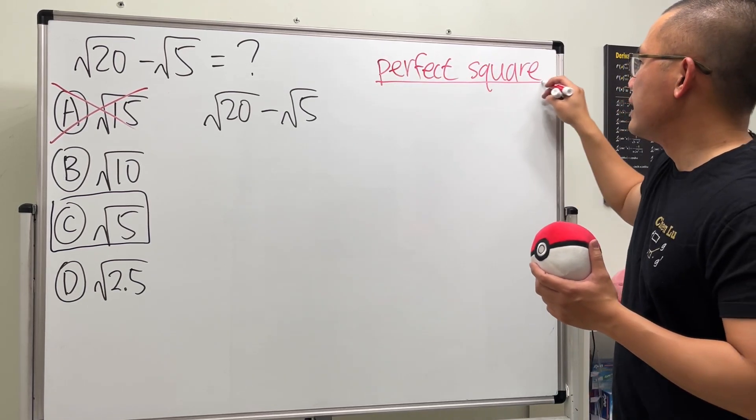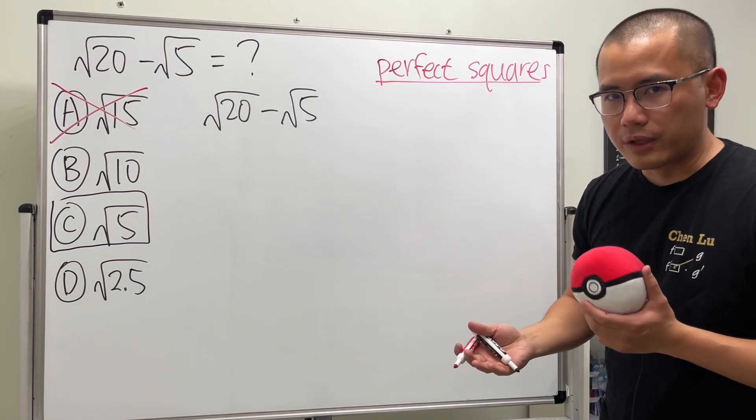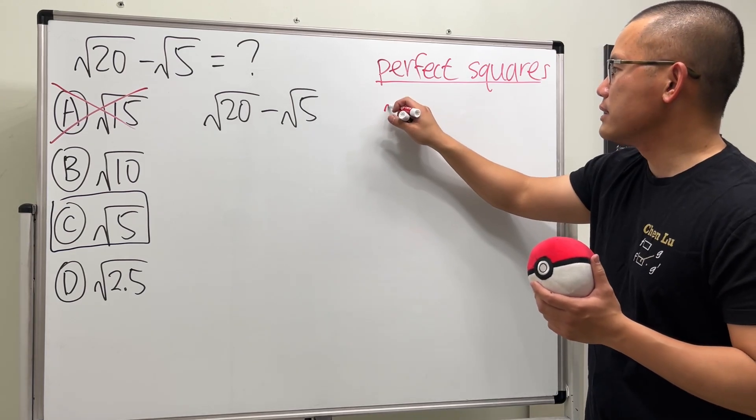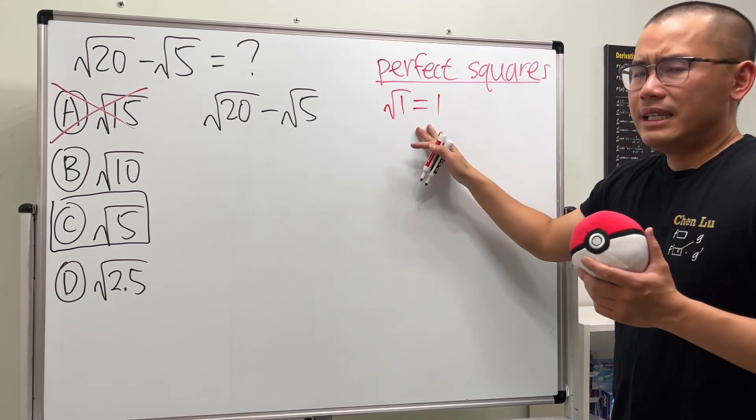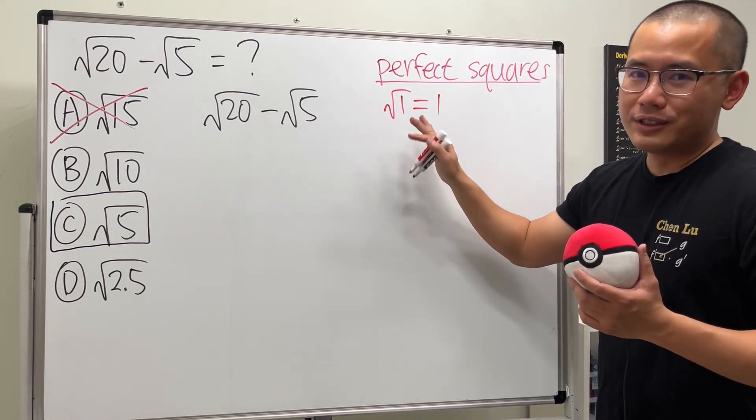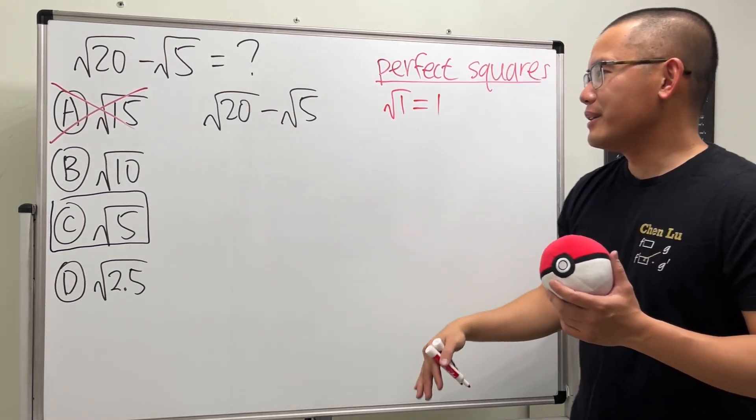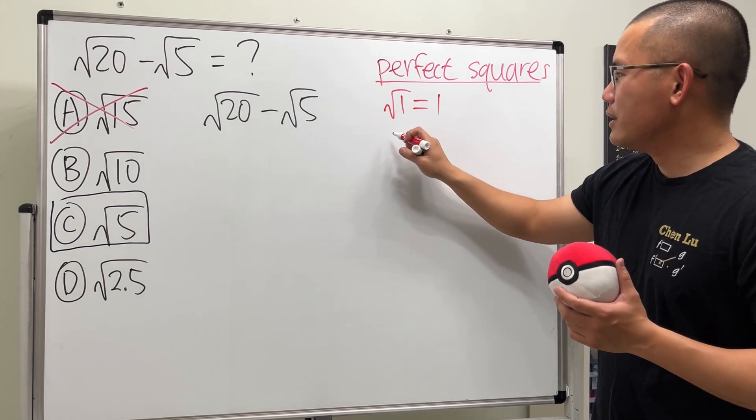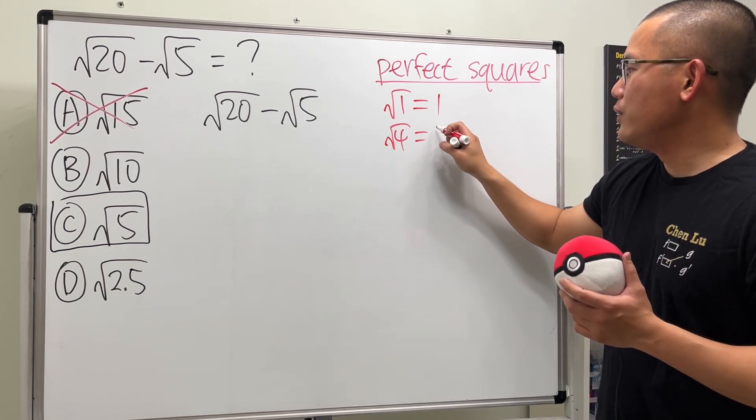These are the numbers that will give you nice number for the square root. For example, the first one is technically square root of 1. This is equal to 1, but it doesn't reduce anything. So never use this to reduce any radical numbers. The next number we do is square root of 4. This will give you 2.